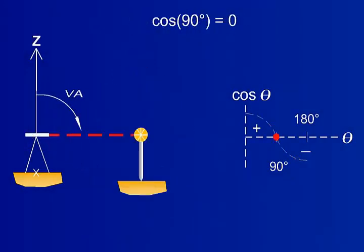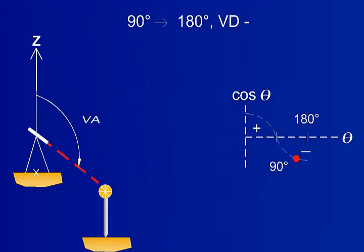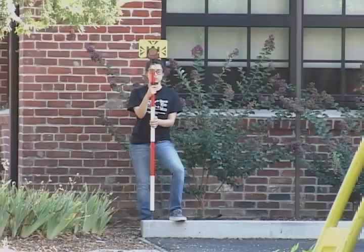As demonstrated, the angle increases as the scope is moved below the initial elevation. In theory, the vertical angle can become as high as 180 degrees. As said before, in the field there are some limitations because of the physical setup of the scope.